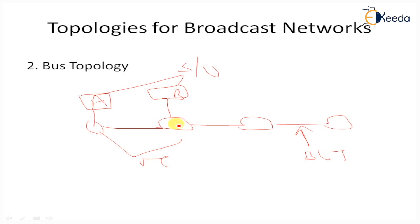Although there are some cases where bus topology outperforms star, star topology is generally a better choice as it can support a larger number of users. This is because power loss and tapping loss in a bus limit the number of users that can be connected without adding optical amplifiers. However, with recent developments of the Erbium-Doped Fiber Amplifier (EDFA), interest in bus topology has been re-energized.